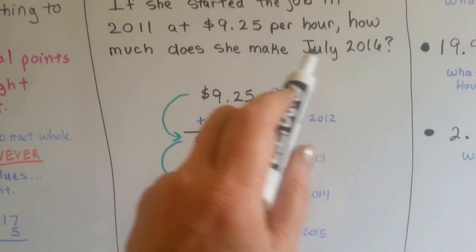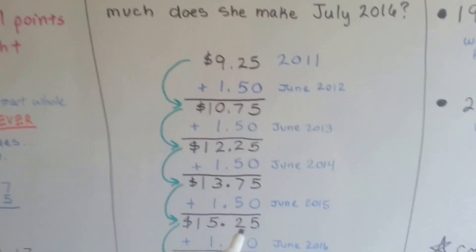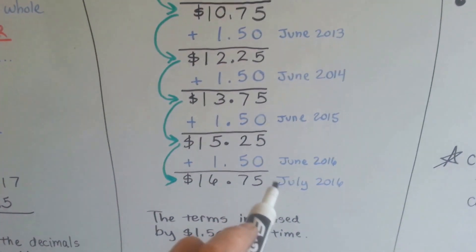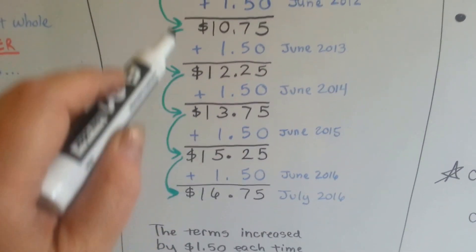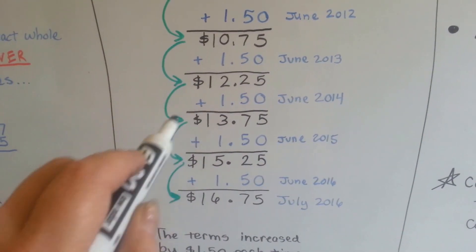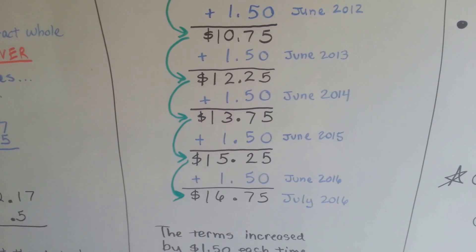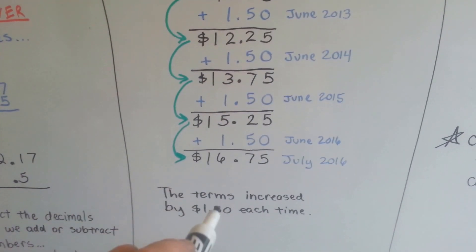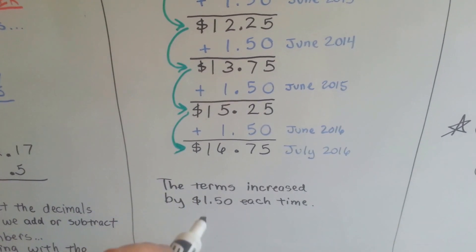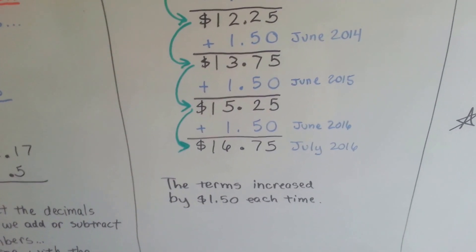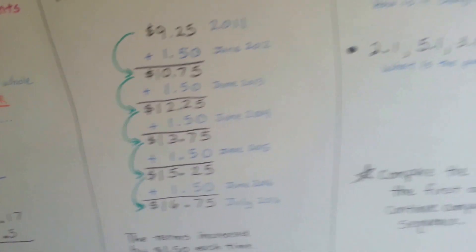Because it says July, we know she got her June raise in 2016. So the terms increased by $1.50 each time. That was the sequence. It just kept going up by $1.50. You'd be able to tell what she's going to make in 2018. She would be able to figure out her finances and to know how much she was going to be making then, what she could afford.